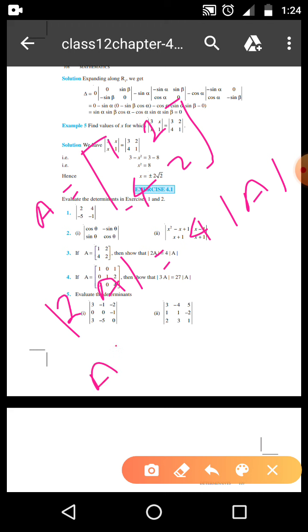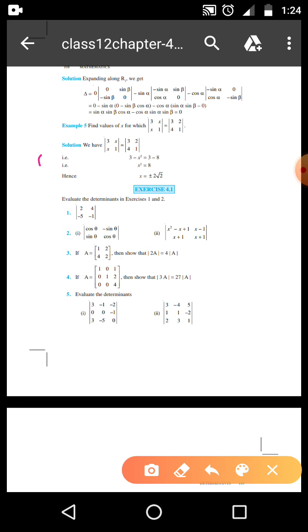So determinant of mod of 2A is equal to 4 times mod of A. So it is very easy. First you find the determinant of A. This is 2 minus 8, and this is 10. Now find 2A. So 2 determinant of A, that is 2 times determinant of A, that is 2, 4, minus 8, 4. So this is 2 times A, that is...